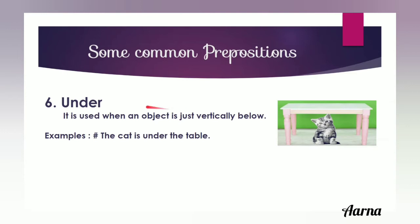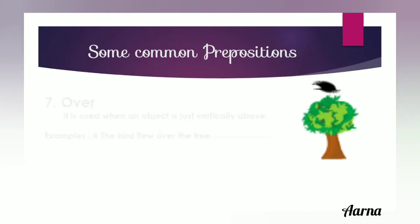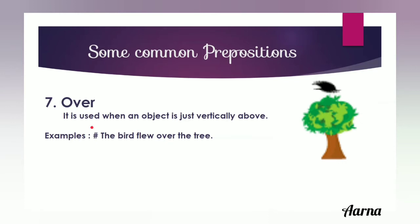The sixth preposition is 'under'. When an object is just vertically below another thing, we use 'under'. For example, the kitchen is just below the table, so we use 'under'. The seventh is 'over'. It is used when an object is just vertically above something. For example, the bird is just vertically above the tree, so we say 'over the tree'.